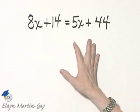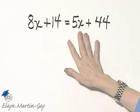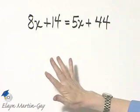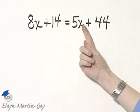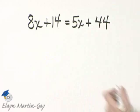Let's use the addition property of equality and make it so we have variable terms on one side of the equation and constants on the other side. To do that, I'll begin by subtracting 5x from both sides.